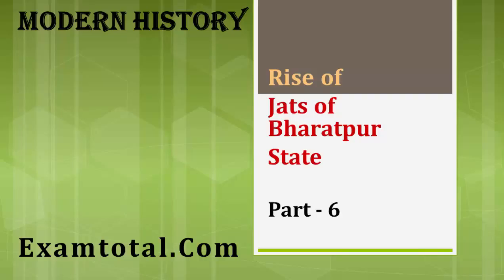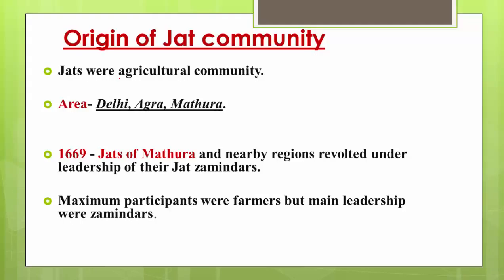First of all, we need to know who the Jats were. Jats basically belong to the agricultural community — they were agriculturists, peasants, farmers, or zamindars. They used to live in the areas of Delhi, Agra, and Mathura. These were the regions in which the Jat community used to thrive.